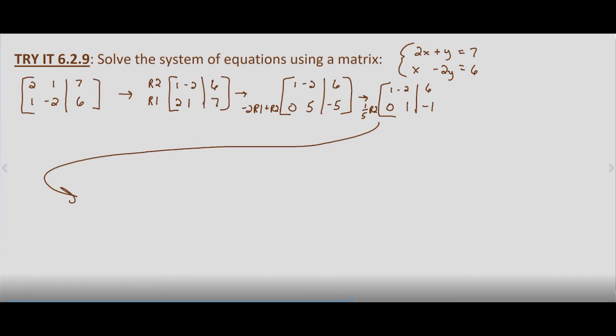So what does this augmented matrix now represent? It represents 1x minus 2y equals 6, and 1y equals negative 1. So we'll substitute into our first equation. This becomes x minus 2 times negative 1 equals 6, x plus 2 equals 6, which gives us x equals 4.